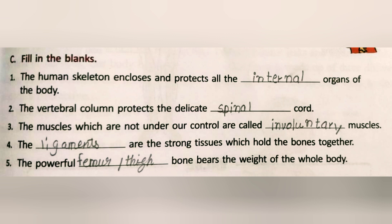Part C: Fill in the blanks. First, the human skeleton encloses and protects all the internal organs of the body. Second, the vertebral column protects the delicate spinal cord. Third, the muscles which are not under our control are called involuntary muscles. Fourth, ligaments are the strong tissues which hold the bones together. Fifth, the powerful thigh bone bears the weight of the whole body.